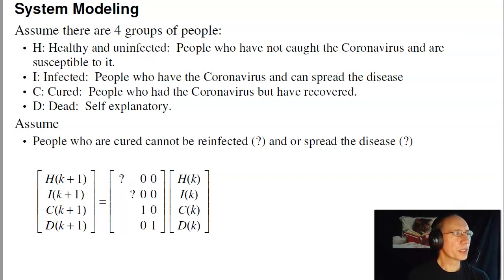So to model this as a Markov chain, I'm going to group the people into four groups. And this is pretty common with infection studies. The four groups are the healthy and uninfected people - these are people that have not caught the coronavirus and are susceptible to it. The infected people, people who have the coronavirus and can spread it. People who are cured, who had the coronavirus but have recovered, and the people who are dead. That's kind of self-explanatory.